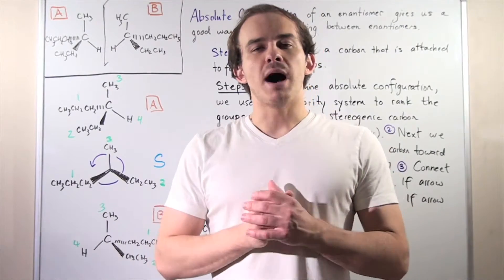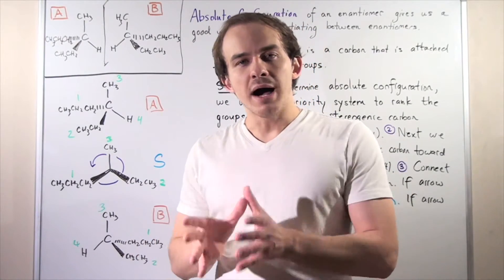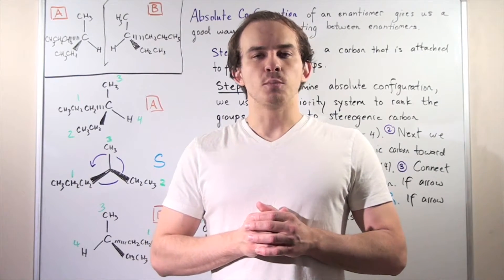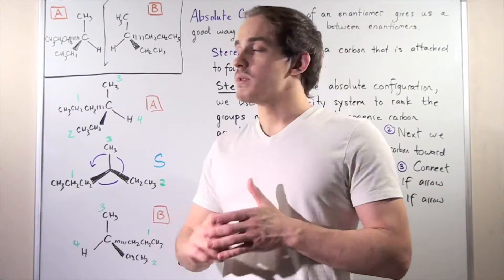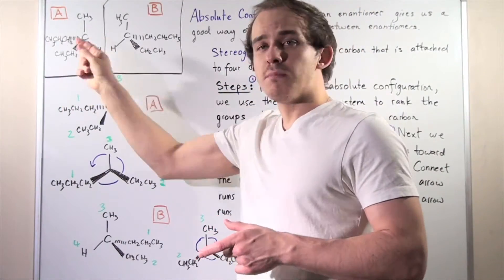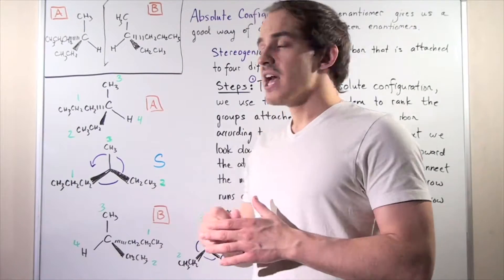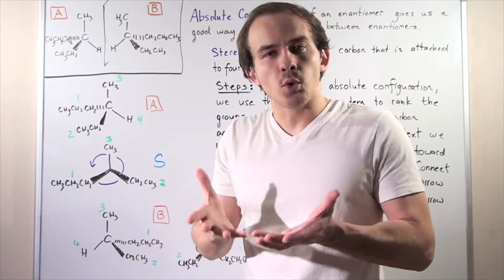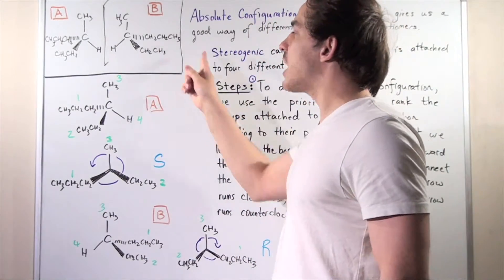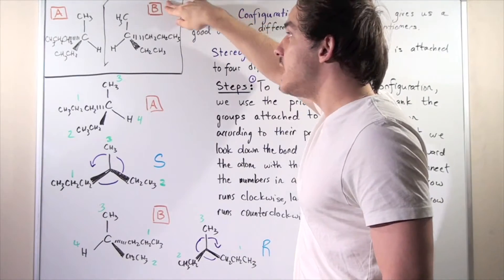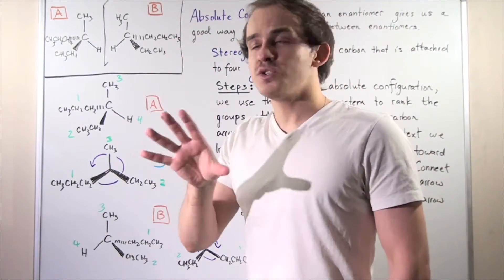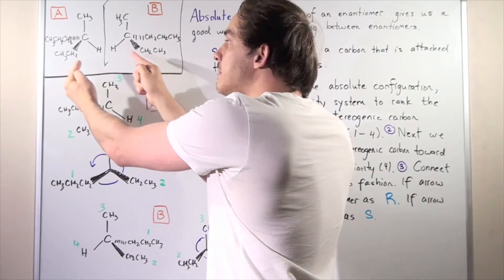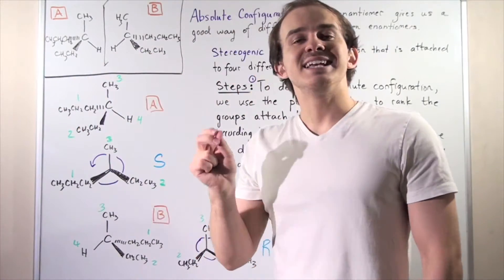Let's recall what a chiral molecule is. A chiral molecule is simply a molecule that has a mirror image that's not superimposable. Here we have compound A, a chiral molecule, and that means it has a mirror image, compound B, that is not superimposable. No matter how much I rotate this mirror image, compound B, I will not be able to produce back compound A. These are two different molecules called mirror images, also known as enantiomers.